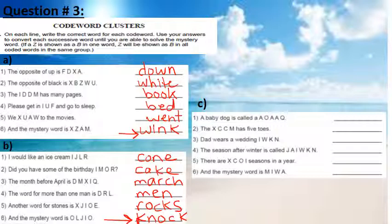Now part C. A baby dog is called a puppy. The foot has five toes. Dad wears a wedding ring. The season after winter is spring. There are four seasons in a year and the mystery word is, M is T, I is R, W is I, and A is P. The mystery word is trip.